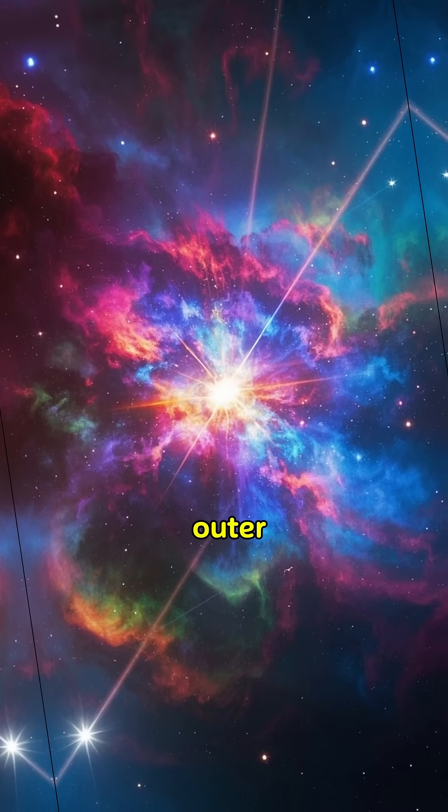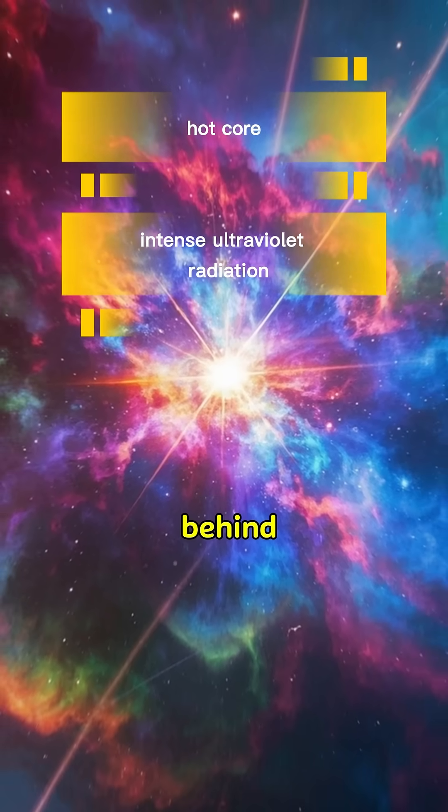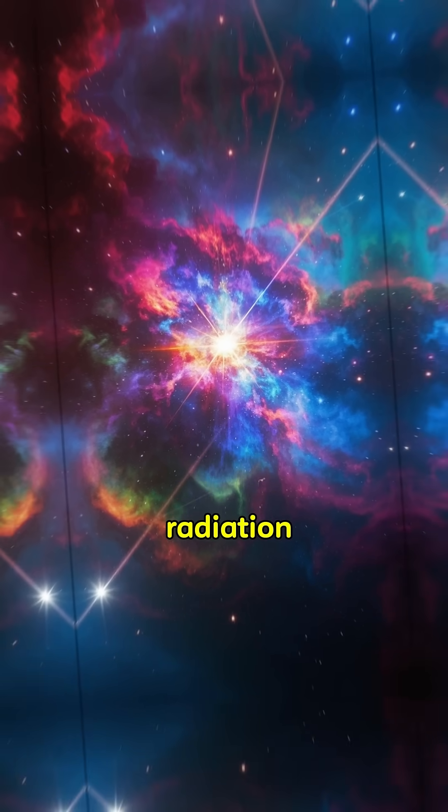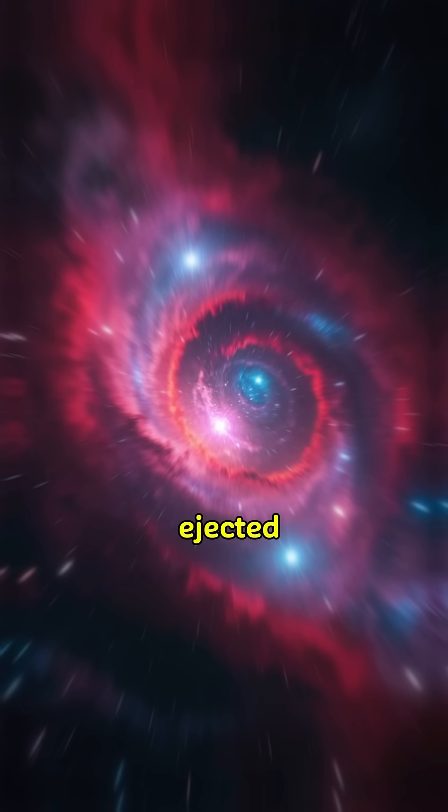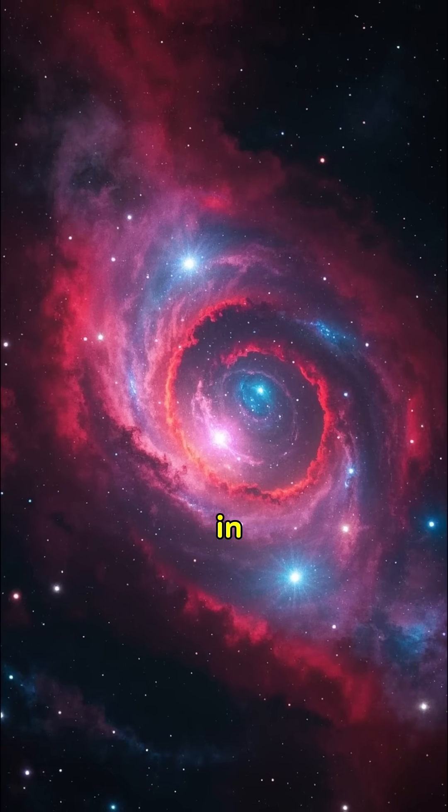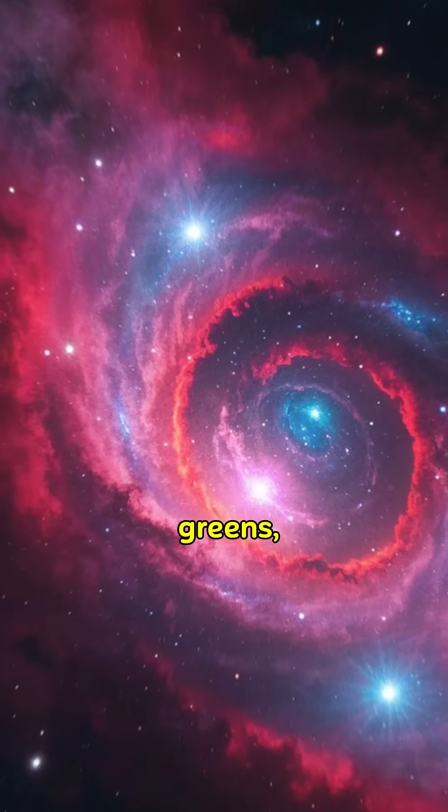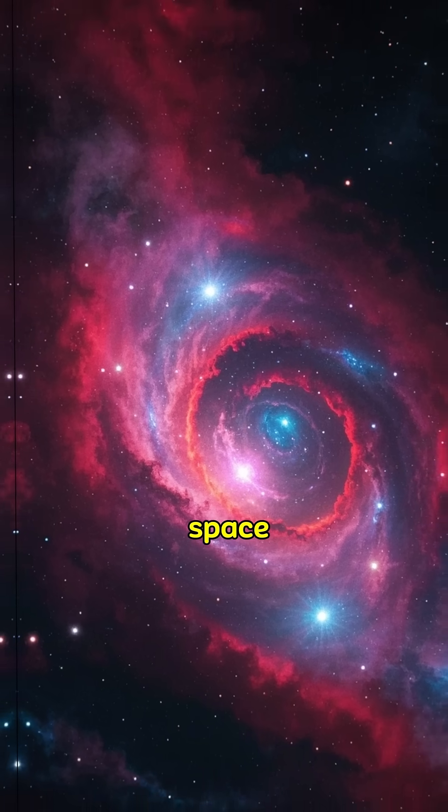As the star expels its outer layers, the hot core left behind emits intense ultraviolet radiation. This energy ionizes the ejected gas, causing it to glow in vibrant colors—reds, greens, and blues—forming intricate patterns in space.